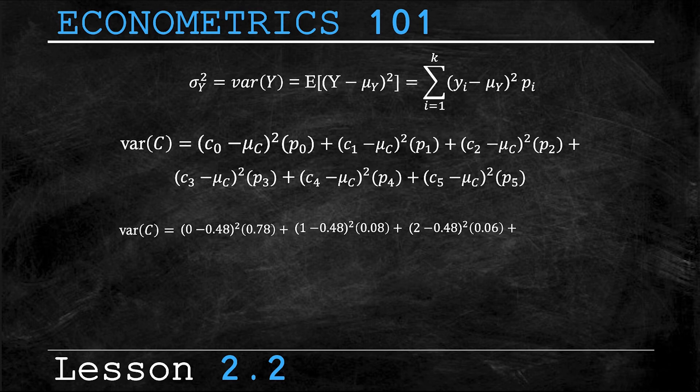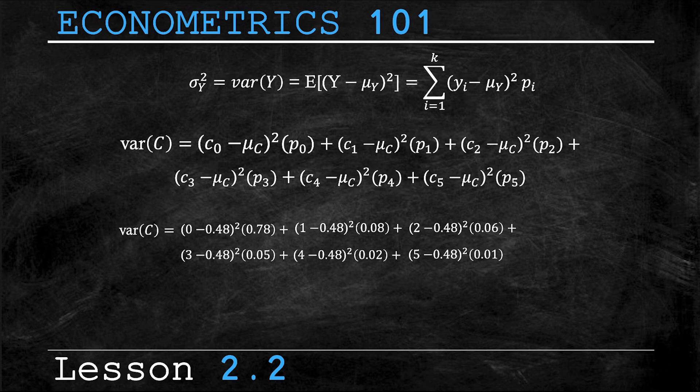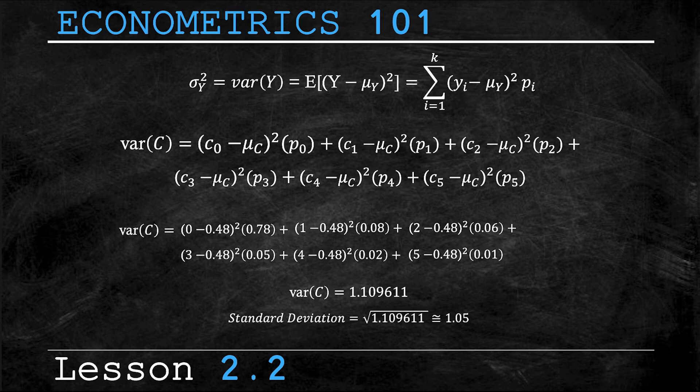Now with some simple algebra, I've determined the probability weighted variance is 1.109611. Remember that we said variance presents an awkward unit of measurement. So we'll take the square root of that to get the standard deviation, which in this example is approximately 1.05 crashes.